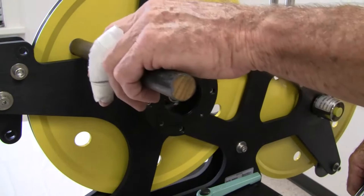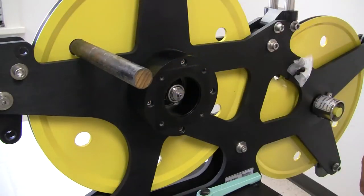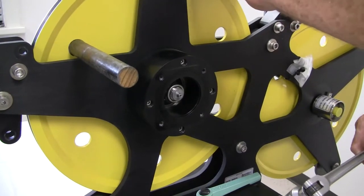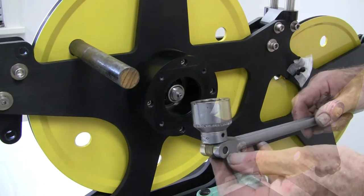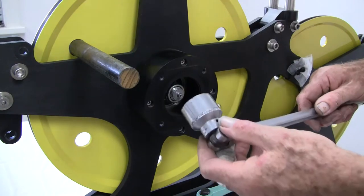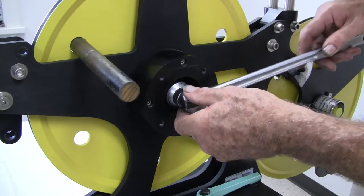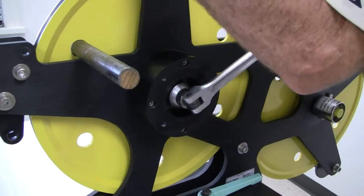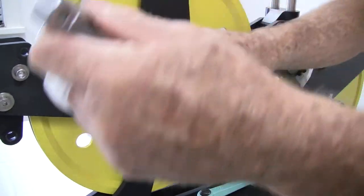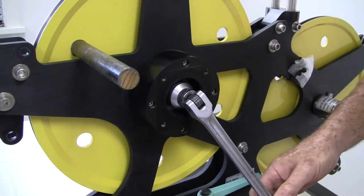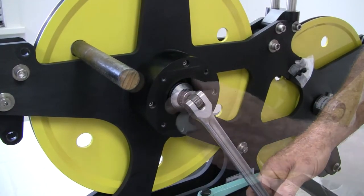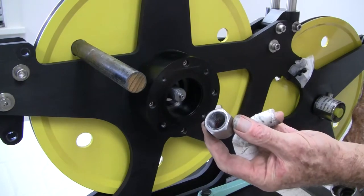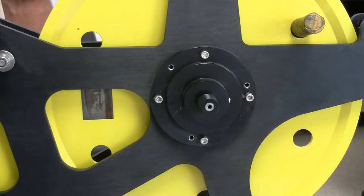Take a wooden dowel about the size of a broom handle and put it through a hole in the measuring wheel to stop it from rotating while the large nut is removed from the shaft. Use the one seven sixteenths socket and loosen and remove the nut. Take the dowel out of the measuring wheel.